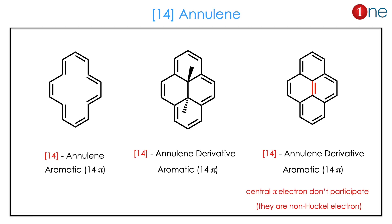Here we will learn by example. Take [14]annulene — this is a continuous double-bonded system. If you count, you have 14 pi electrons, so it is obviously a 4n+2 aromatic system. There can be derivatives of such annulenes that behave the same way. The second example is a bridged locked annulene, which also has 14 pi electrons and is aromatic.